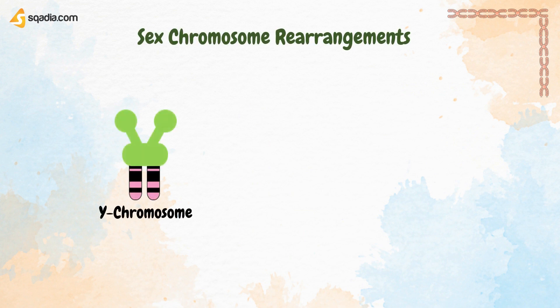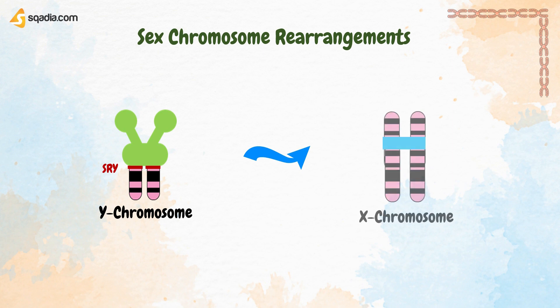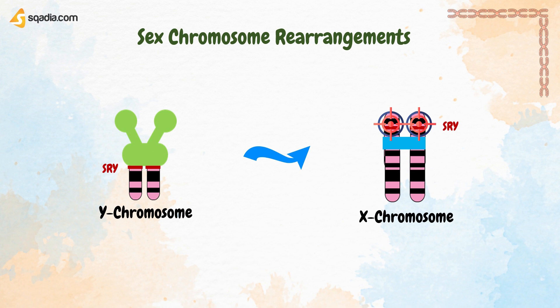Now let's discuss sex chromosome rearrangements. In some phenotypic males lacking a Y chromosome, the male-determining SRY locus has been translocated from its normal site, often to the X chromosome. An SRY probe reveals the site to which the male-determining SRY locus has been translocated. This was all about Fluorescent In Situ Hybridisation; in our next video we will talk about Comparative Genome Hybridisation.